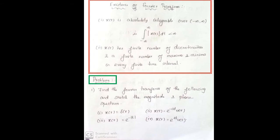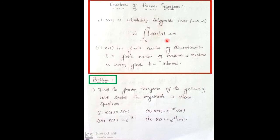To apply Fourier transform to a signal, it should satisfy two conditions. The first condition is that x(t) must be absolutely integrable over minus infinity to infinity — that is, the integral of x(t) over that interval should give a finite value. If it equals infinity, we cannot apply the Fourier transform to that signal.